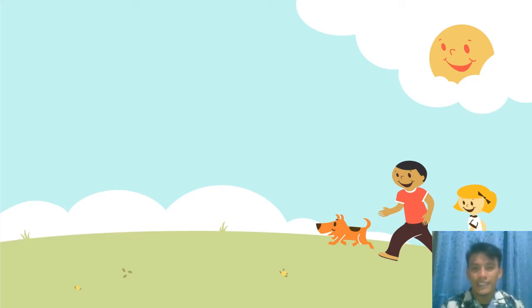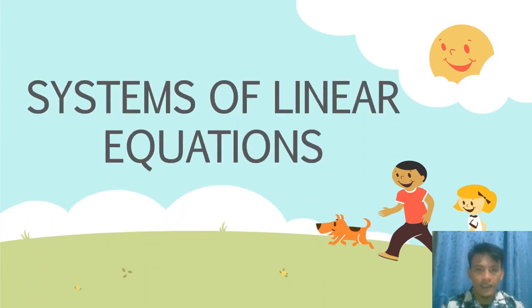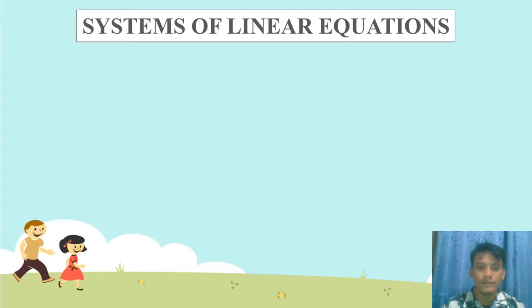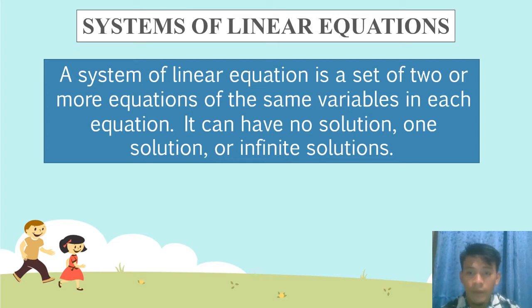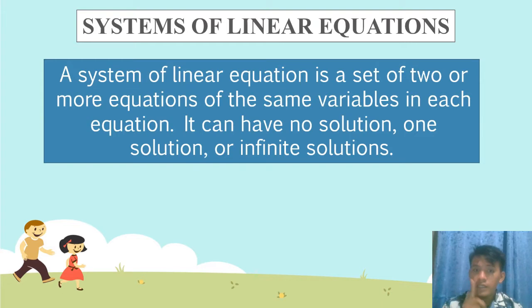In this topic, I'll discuss about systems of linear equations. A system of linear equations is a set of two or more equations of the same variables in each equation. It can have no solution, one solution, or infinite solutions. It depends on the graph.